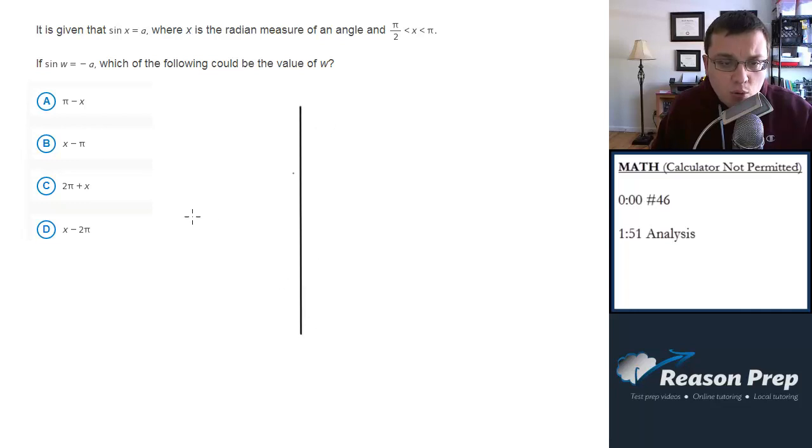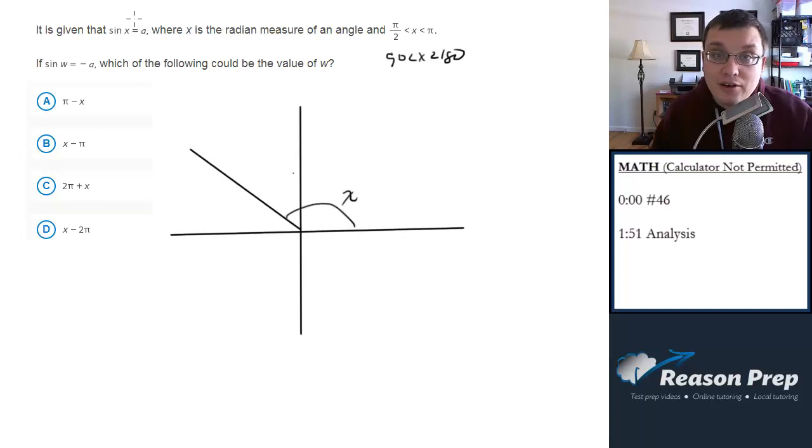Let's sketch this out. We're told that our angle x is in the second quadrant, right? It's between pi over 2 and pi, in other words, between 90 and 180 degrees. So we'll say it's this, so here's x, and the sine of x is going to be some value a.